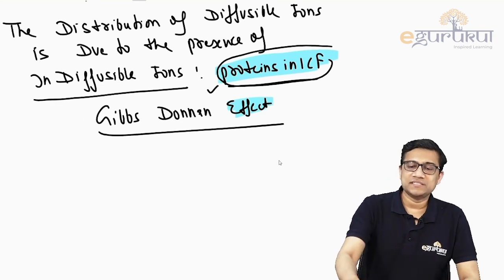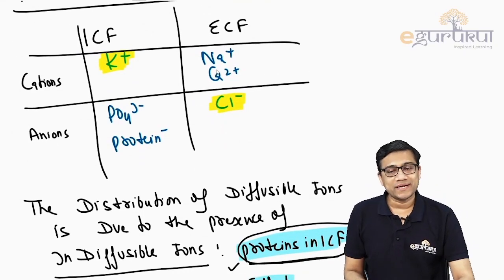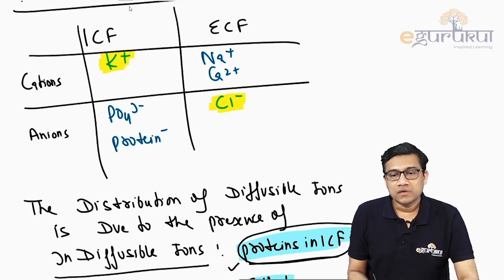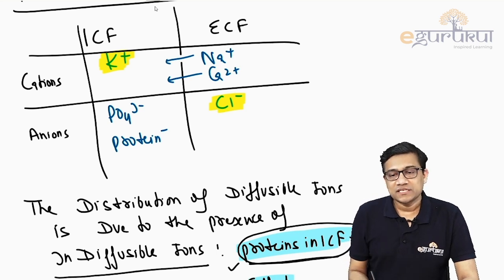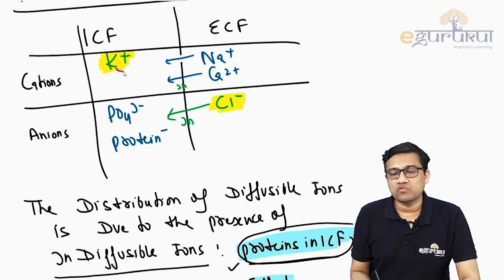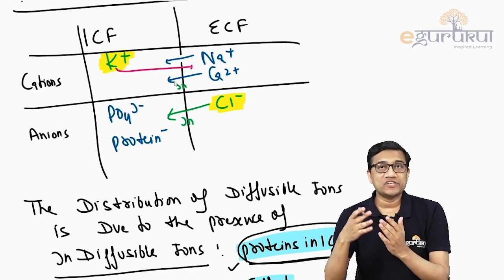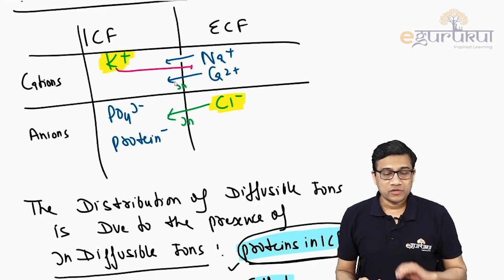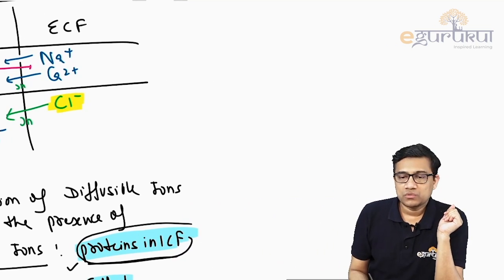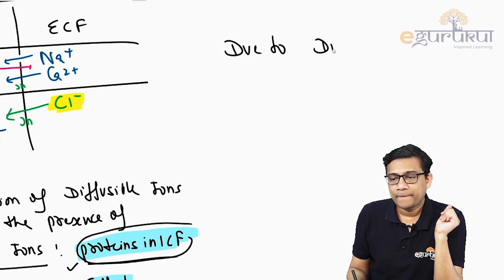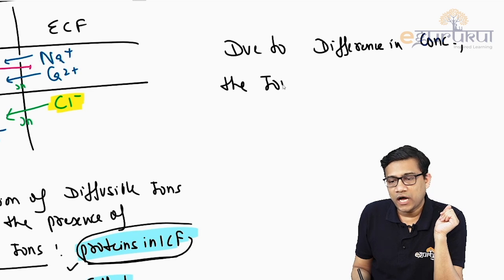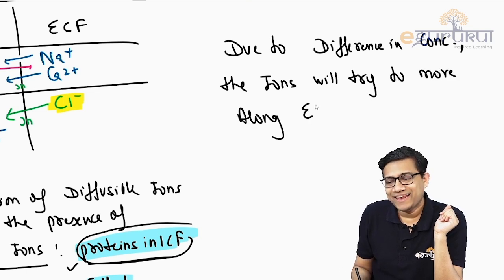Since sodium and calcium are more outside, they will try to move in when channels open. Chloride will also try to move inside, while potassium ions will try to move outside. Due to the difference in concentration, ions will try to move along their electrochemical gradient to achieve equilibrium.